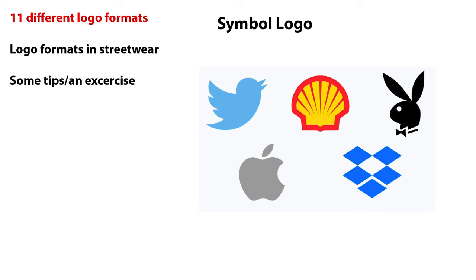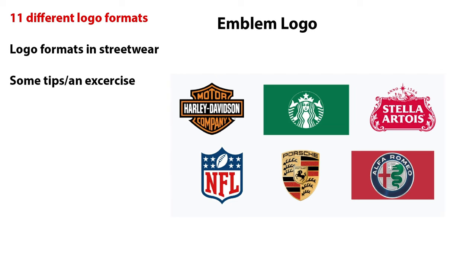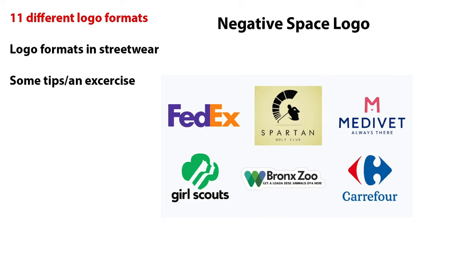Mascot logos are fun and personable, but also limited — not every brand will benefit from a mascot logo. Emblem logos are a contained design that includes all the elements inside an emblem shape. Brands that use emblem logos hardly ever have other logo varieties, but might have simplified versions of the same emblem. Similar to an emblem but not exactly — the difference between them is the level of complexity. You could say that an emblem is to a combination mark what a letter inside of a shape is to a wordmark.